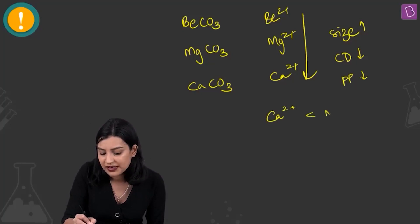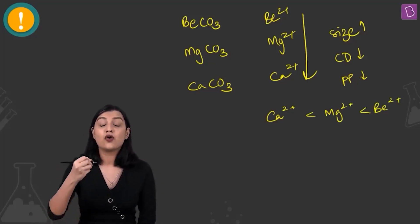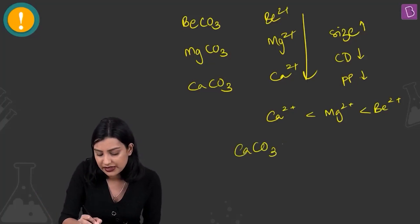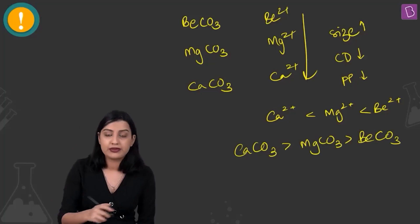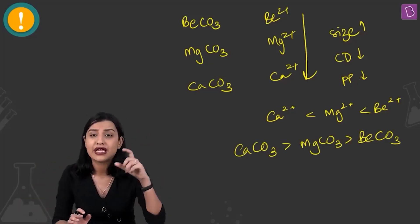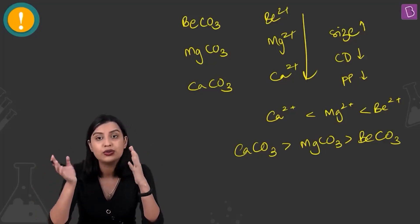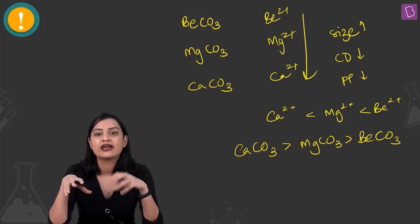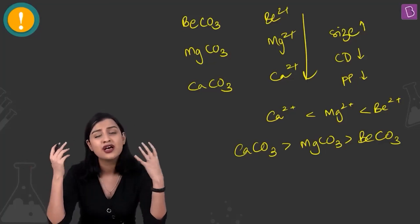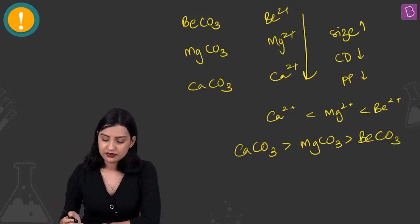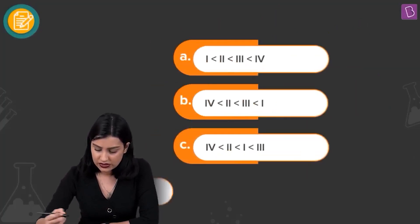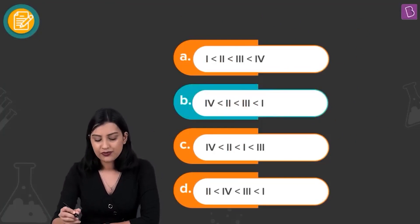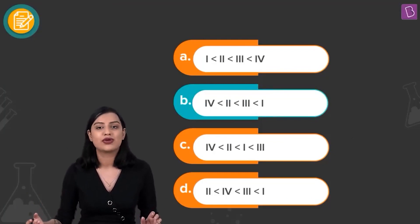Higher polarizing power means lower thermal stability. Carbonate is a large anion, and to stabilize it you need a larger cation. Beryllium, being small with high charge density, polarizes the carbonate cloud and destabilizes it. So the order of thermal stability is: K₂CO₃ > CaCO₃ > MgCO₃ > BeCO₃. Based on the options, option B is the right answer.